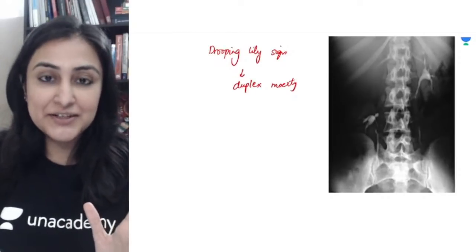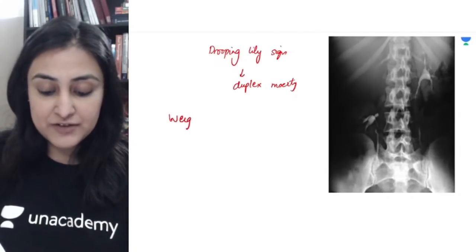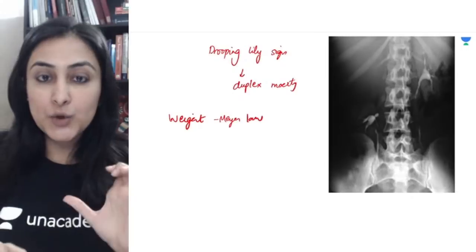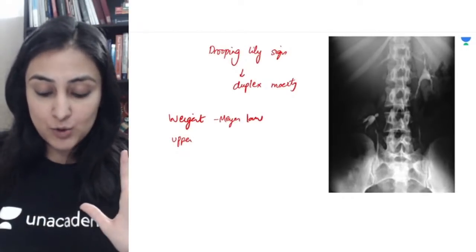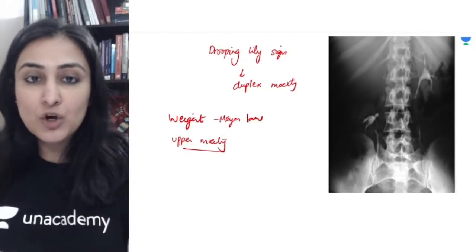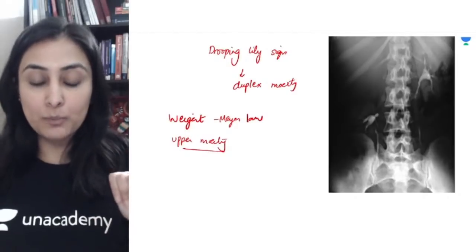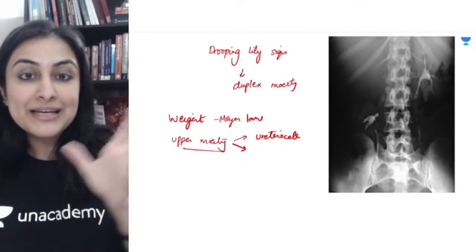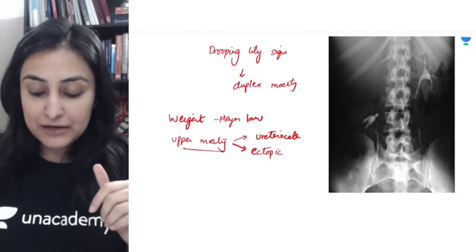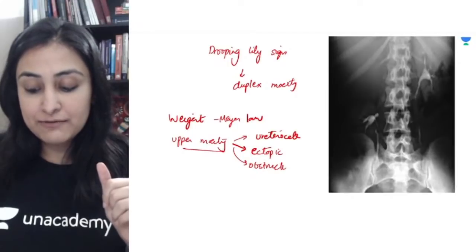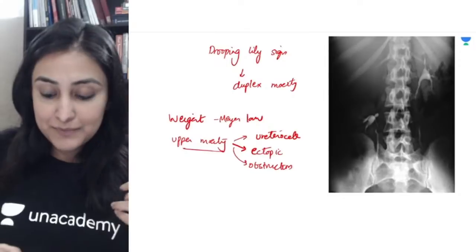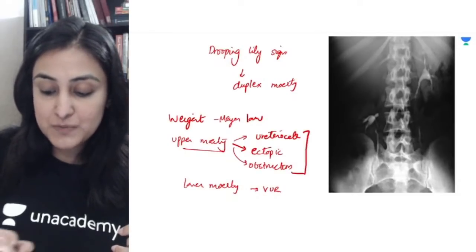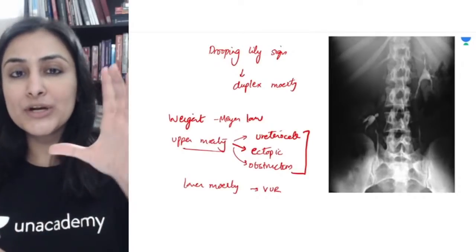When you have a duplex moiety, you need to know the Weigert-Meyer law. The golden rule is: vowels stick together. Upper moiety — the complications are ureterocele (as we saw with the adder head), ectopic ureterocele, and obstruction — all vowels sticking together with the upper moiety. The lower moiety typically undergoes reflux, i.e., vesicoureteric reflux.